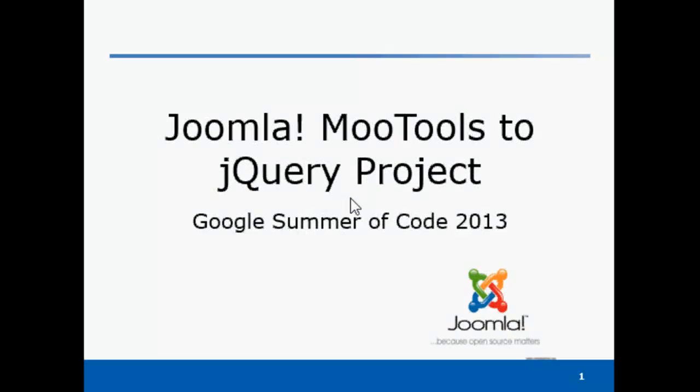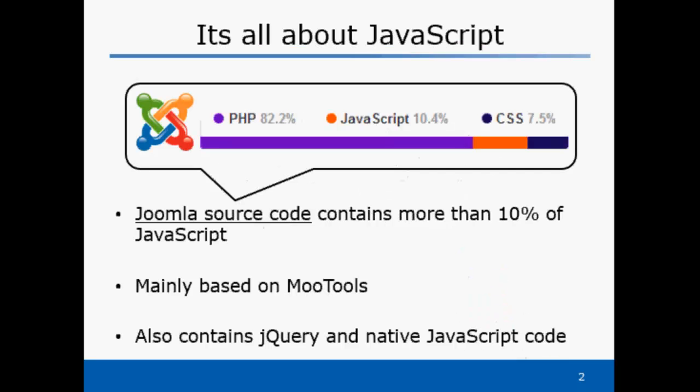The Joomla MooTools to jQuery project is carried out under the Google Summer of Code program in 2013, and is mentored by Jensen Toney and Roberto Segura. As you can see by the project title, it's mainly about JavaScript modifications in Joomla.